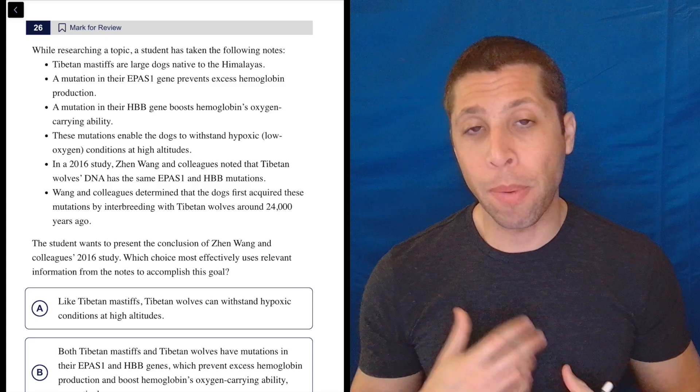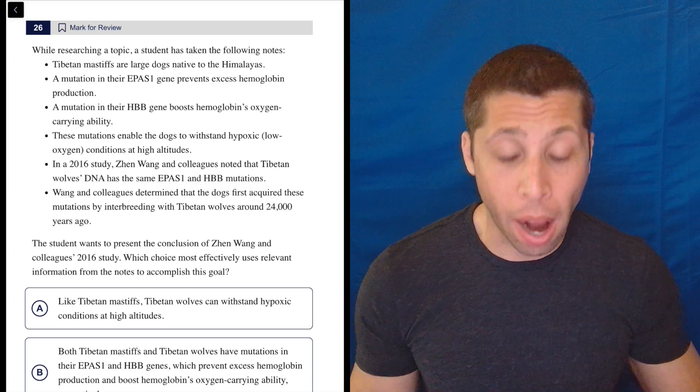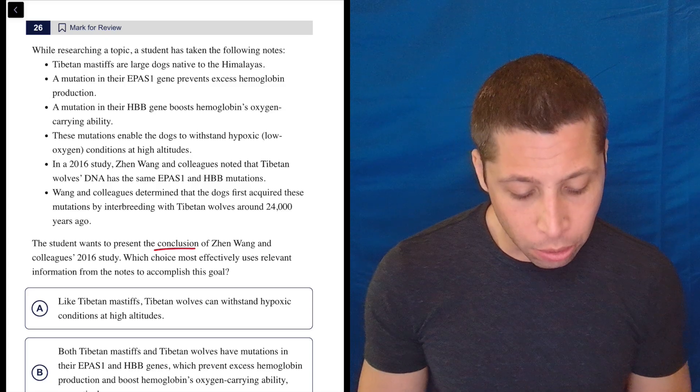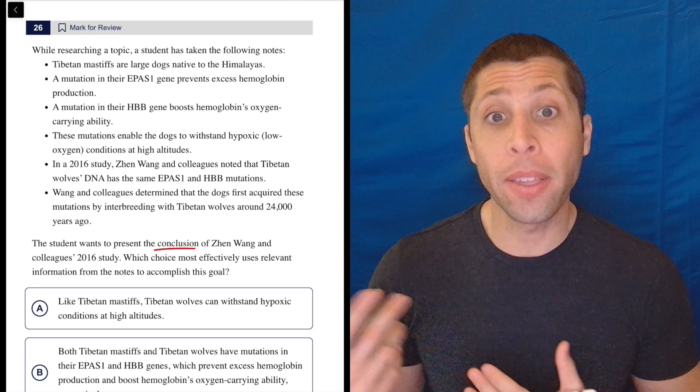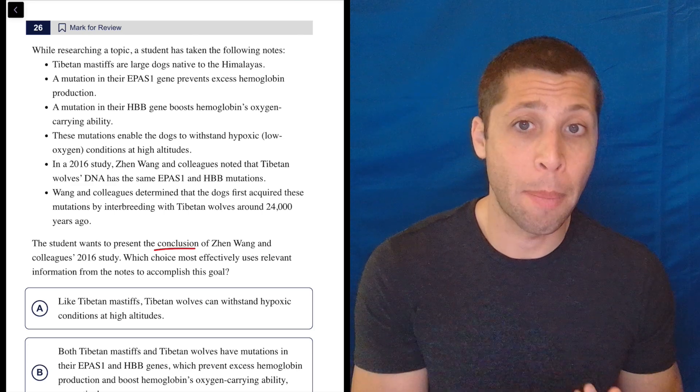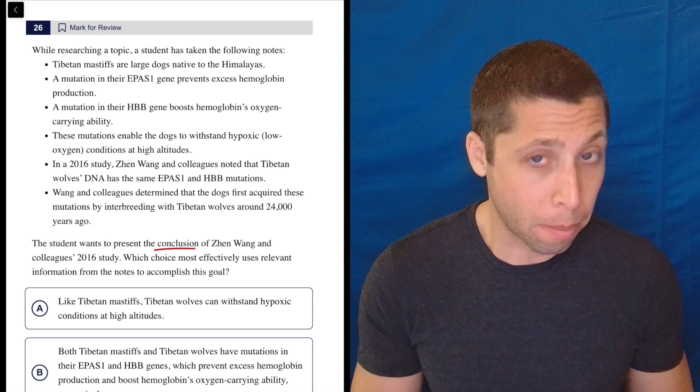A lot of these questions for the outlines are about different parts of the scientific process. The student wants to present the conclusion of these people's study. That's different from the methodology. That's different from the aim or the hypothesis. Let's just make sure we keep that in mind as we go.